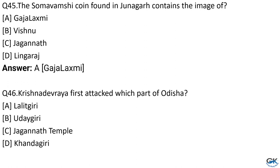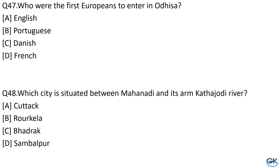Question No. 46: Krishna Deva Raya first attacked which part of Odisha? Option A: Lalitagiri. Option B: Udayagiri. Option C: Jagannath Temple. Option D: Khandagiri. The answer is Option B, Udayagiri. Question No. 47: Who were the first Europeans to enter Odisha? Option A: English. Option B: Portuguese. Option C: Danish. Option D: French. The answer is Option B, Portuguese.